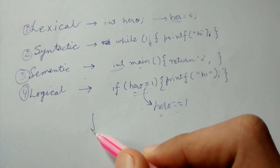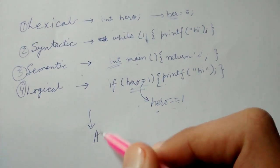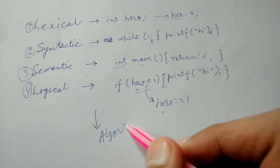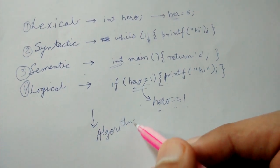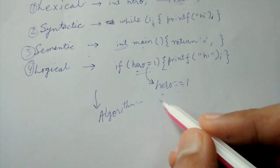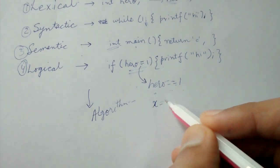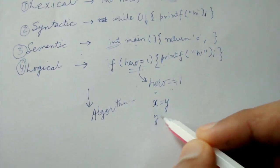There are many other types of errors also, like there can be error in your algorithm or idea. Like suppose you have to swap two numbers, then you can't do it like this.